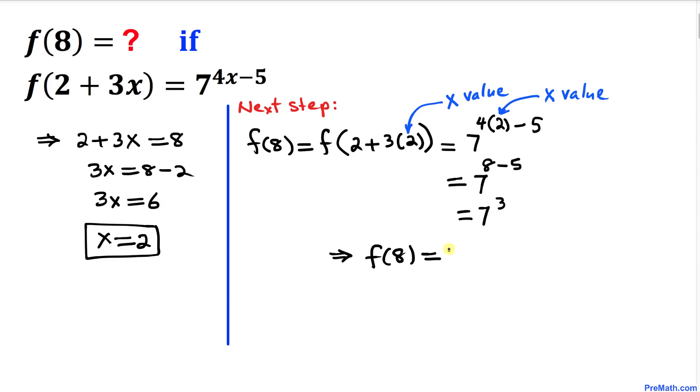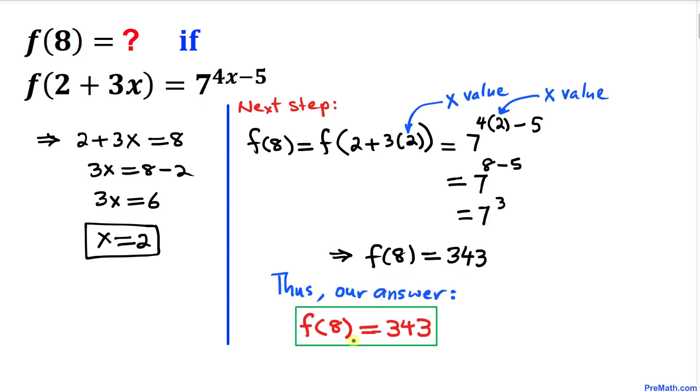So f of 8 turns out to be equal to 7 to the power of 3, which is 343. That's our desired answer: f of 8 equals 343.